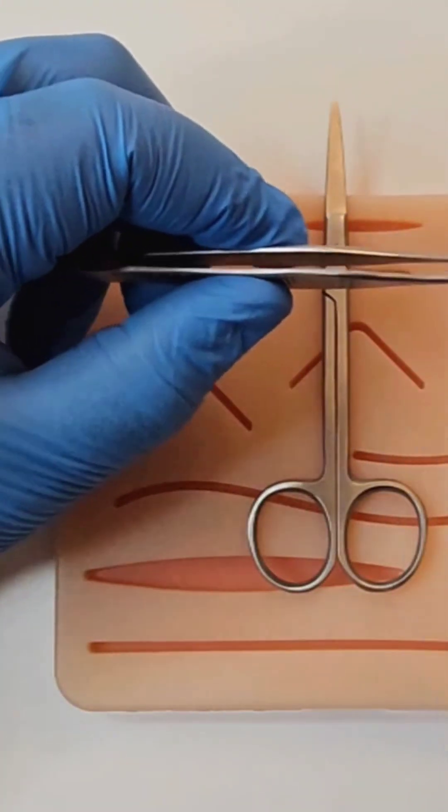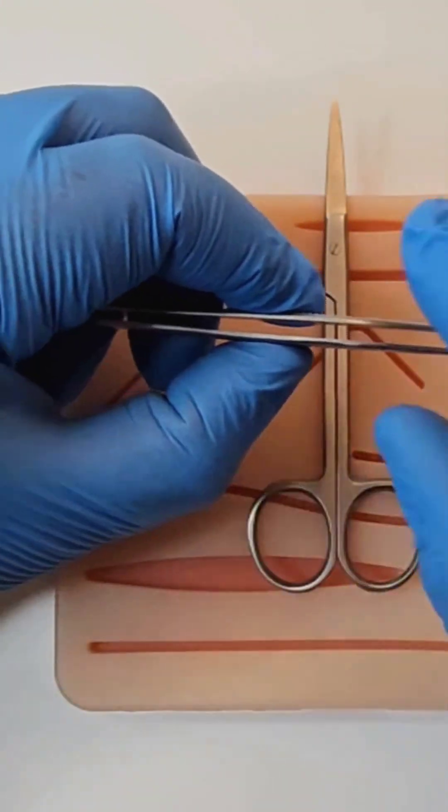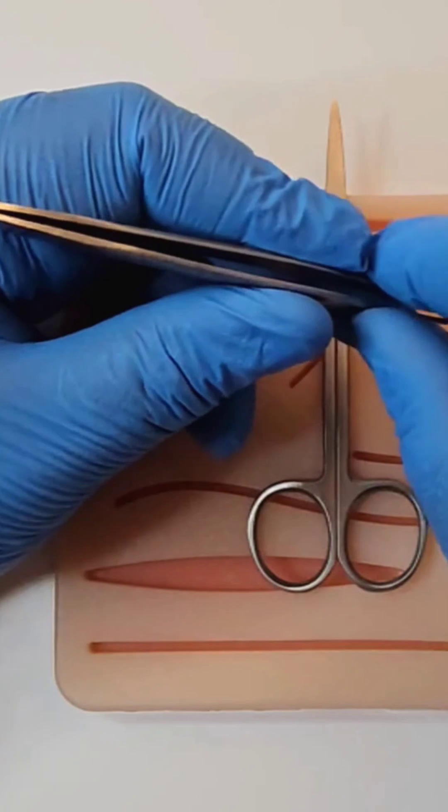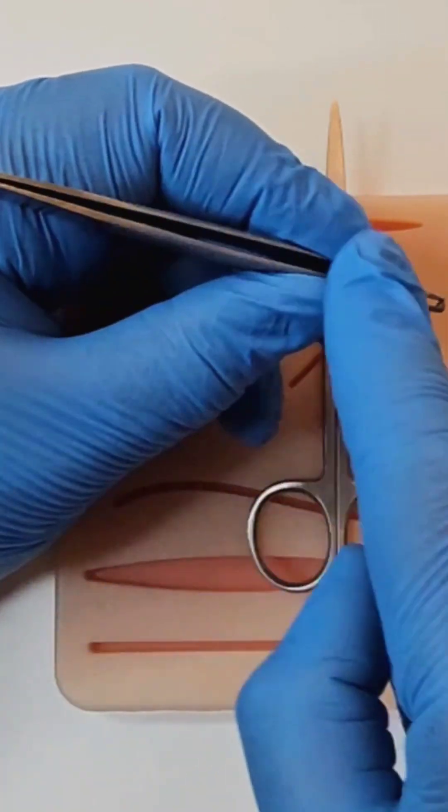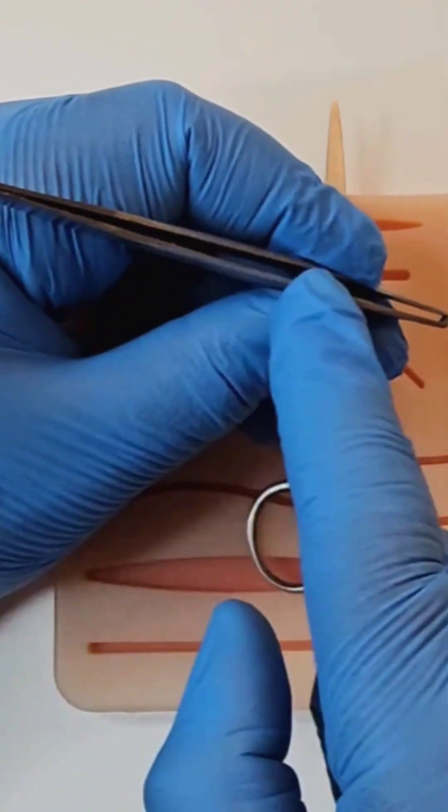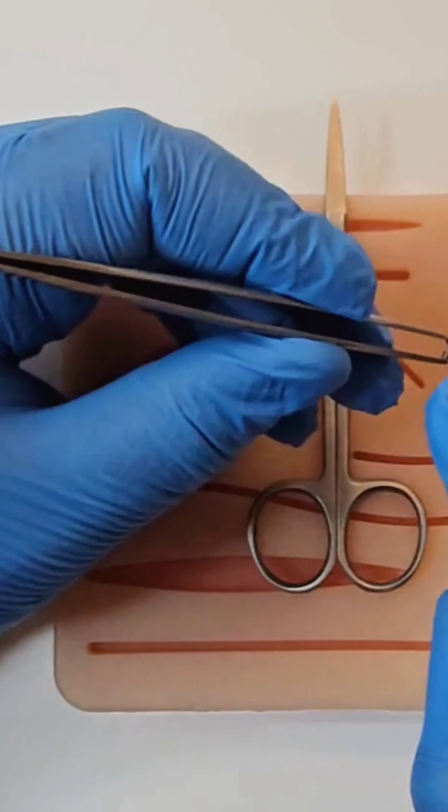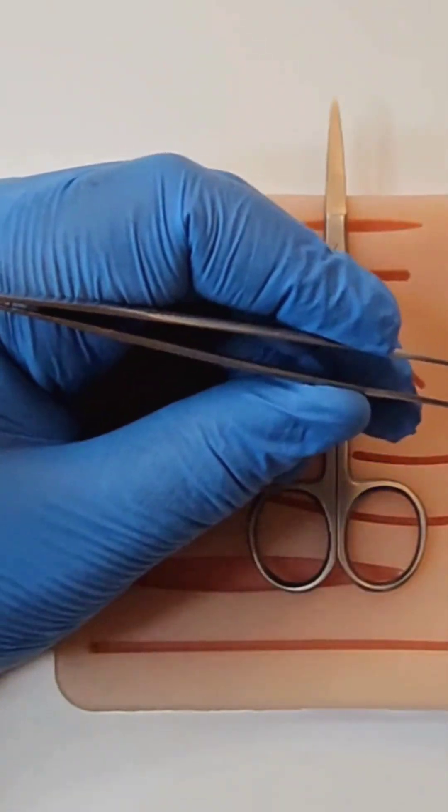We're not tweezing eyebrows, therefore the forceps doesn't sit under. We need control and precision. Try like this with the body of the forceps above your index finger. Little finger can be used for stability.